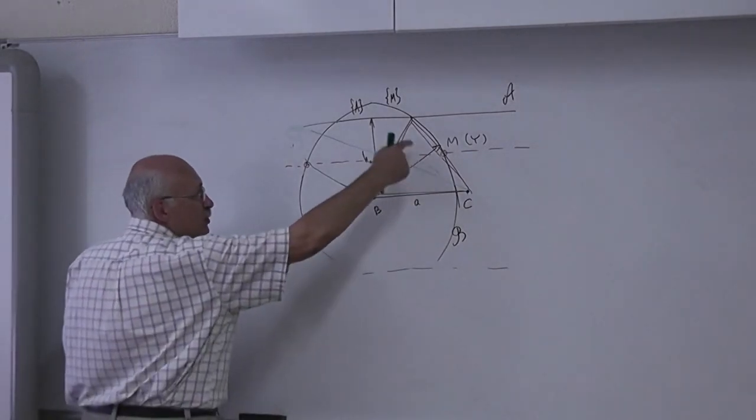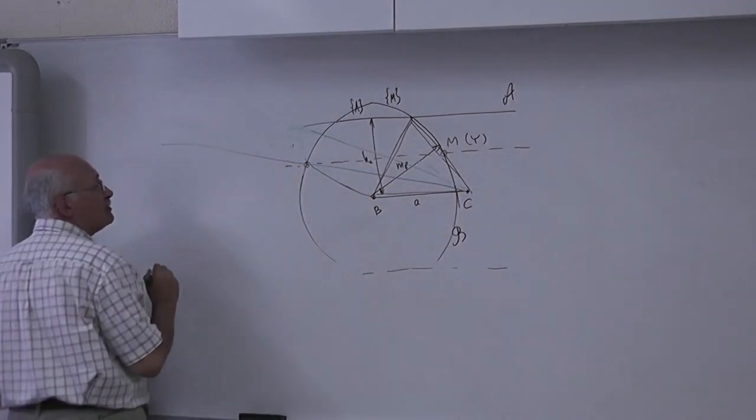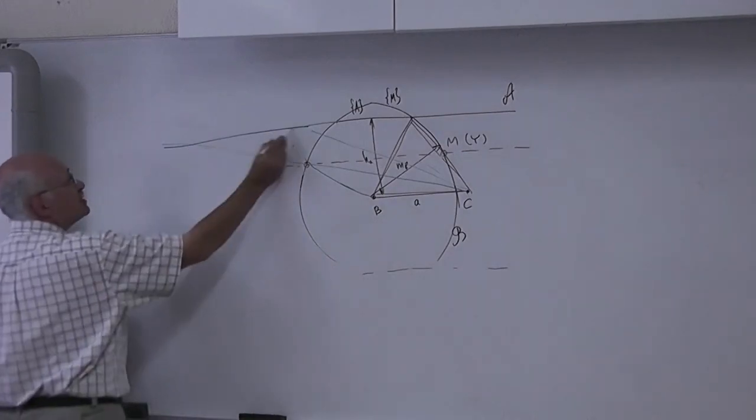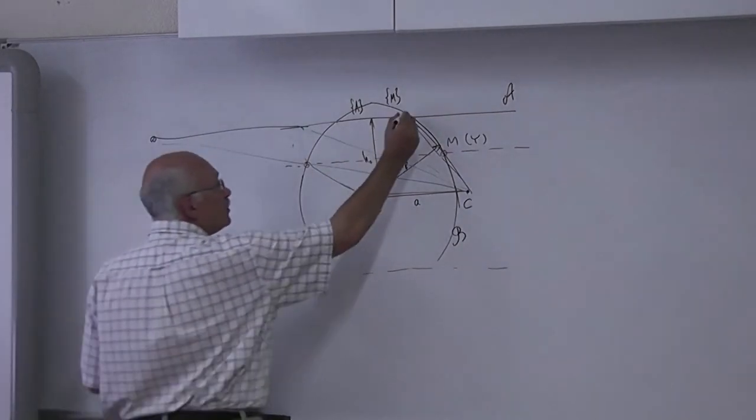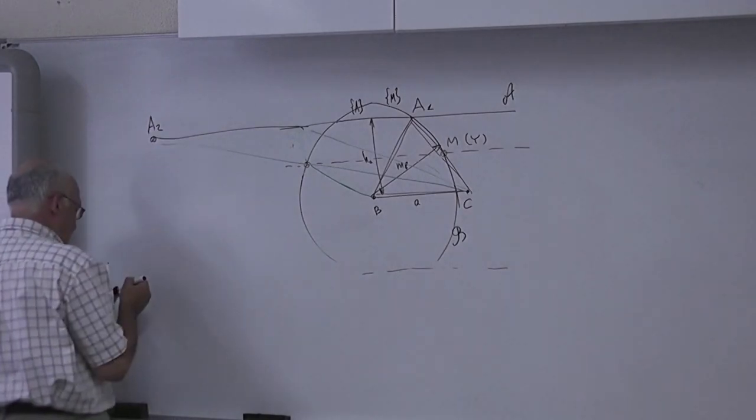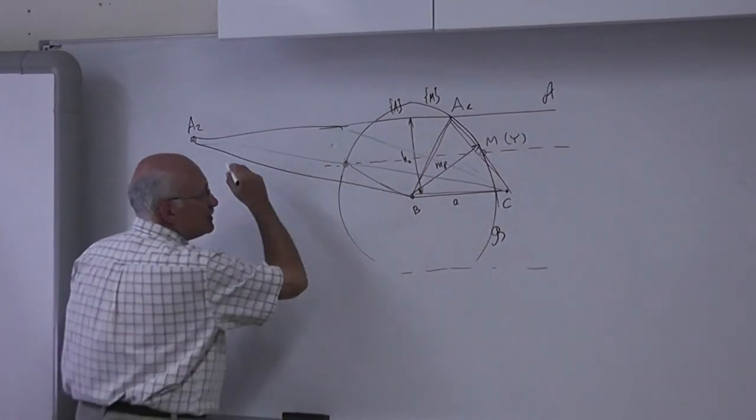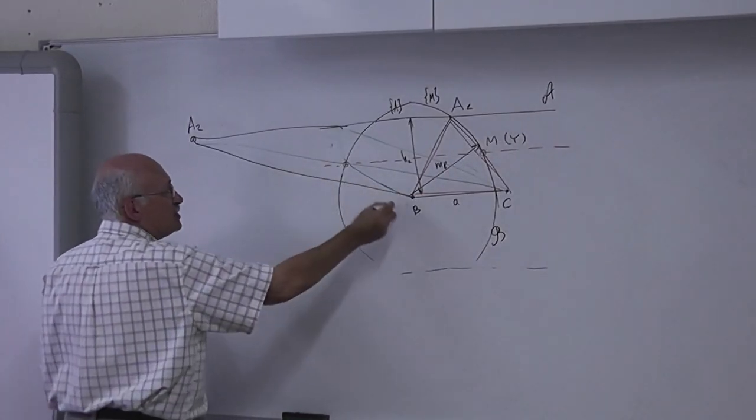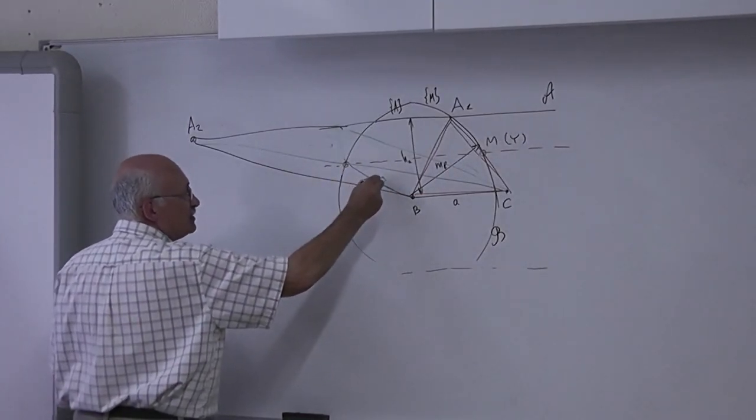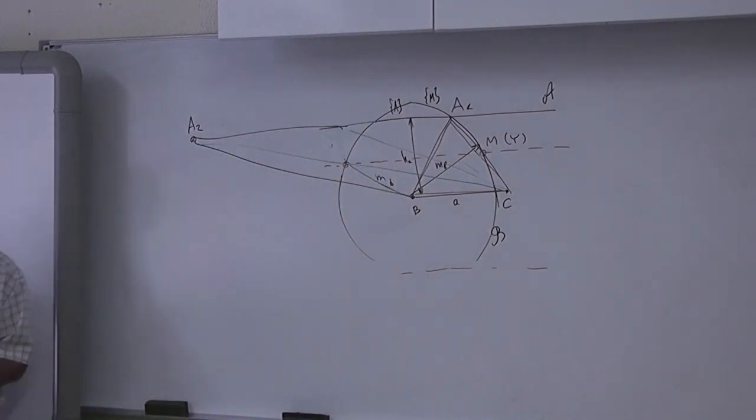So we must do it the same way as we did here. Take C, join it to this point. Take the intersection. The second, this will be A1, this will be A2, B2. And then we have triangle of A2, B2, C, which, for which, this one is the median, MB. Right? Okay? Yes.